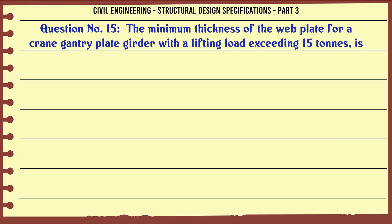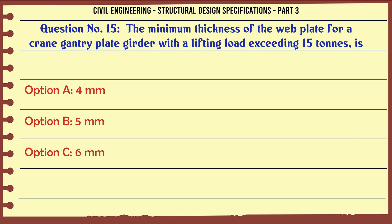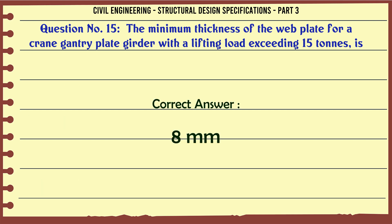The minimum thickness of the web plate for a crane gantry plate girder with a lifting load exceeding 15 tons is: a. 4 mm, b. 5 mm, c. 6 mm, d. 8 mm. The correct answer is: 8 mm.